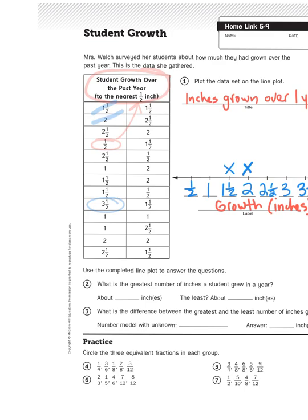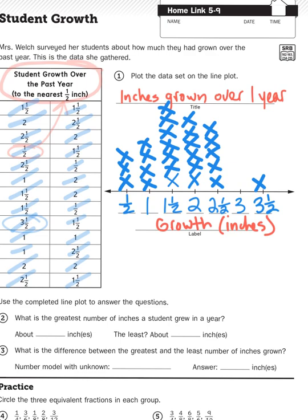So three, two, one. Boom! There you go. A completed line plot graph.